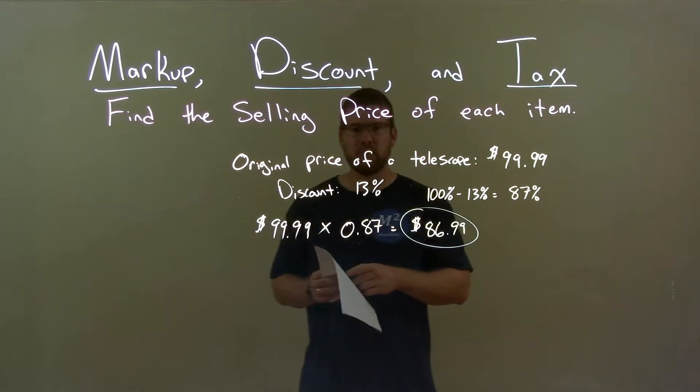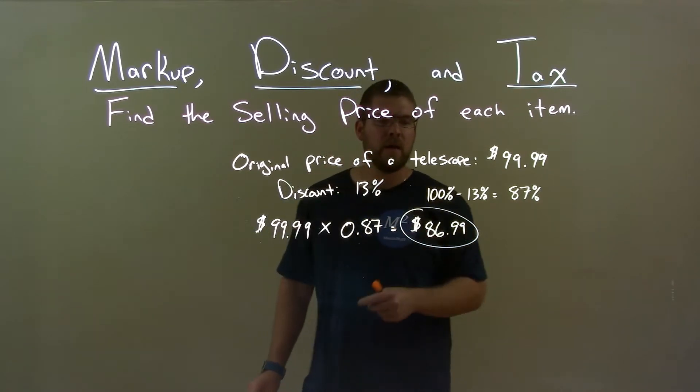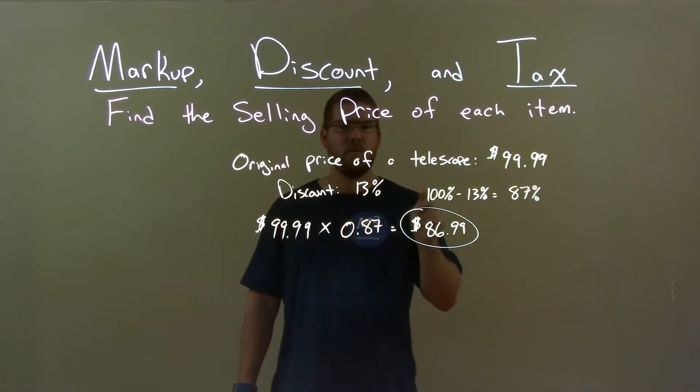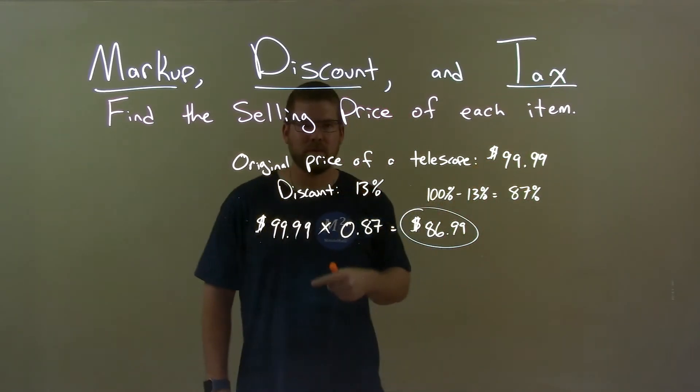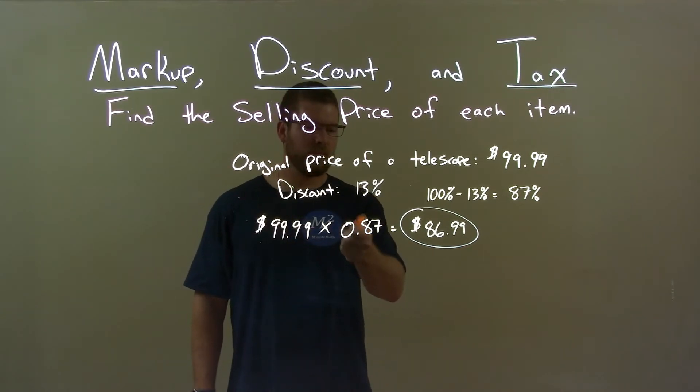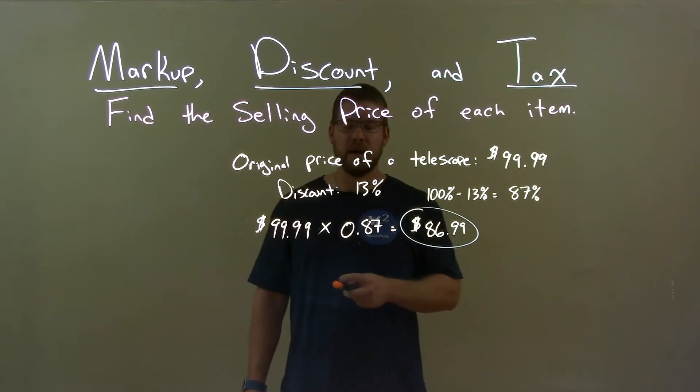Quick recap, we're given the original price of a telescope is $99 and the discount is 13%. Well, we did a calculation, 100 minus 13 gives me 87%, so 87% is what we're really going to pay of the original price. Original price times 87% as a decimal, 0.87, gives us our final answer, $86.99.